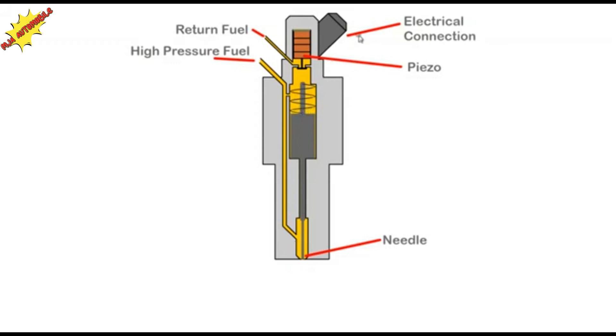When the ECU, electronic control unit, energizes the piezo crystal, it expands and the valve moves down, releasing the pressure fuel in the top chamber. The high pressure fuel moves the needle up and the fuel is injected.